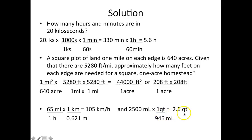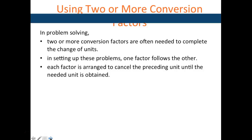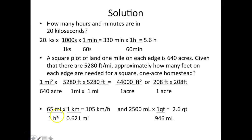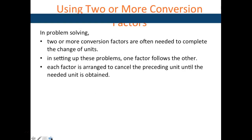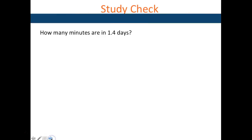As we've seen, when writing these conversion factors — especially a series of them — you set them up so the units you don't need get cancelled out. The final conversion factor always has your desired unit in the numerator. Each factor follows the other, cancelling units until you reach your needed unit.